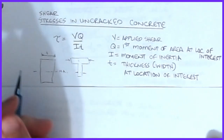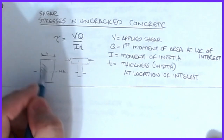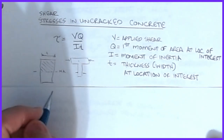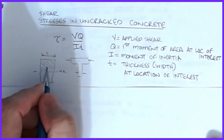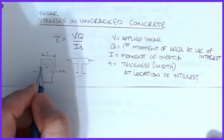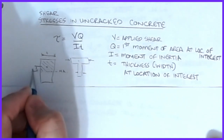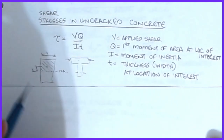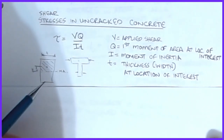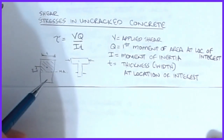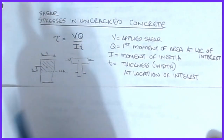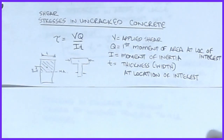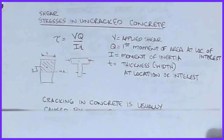Q is set up as the area above or below the point of interest. For tau max, which always occurs at the neutral axis, you find the area above that point and multiply by its centroidal distance. We'll have a video on section property calculations shortly, but you can also refer back to your mechanics textbook. Q is called the first moment of area.